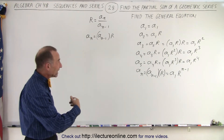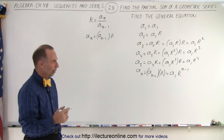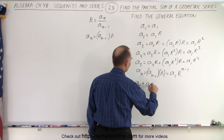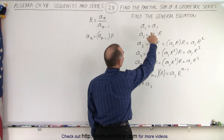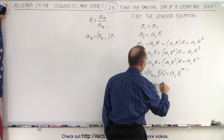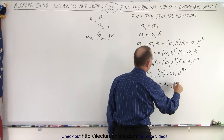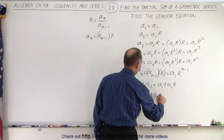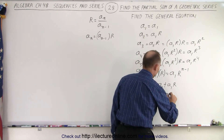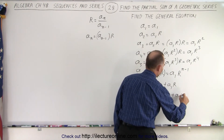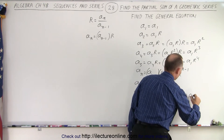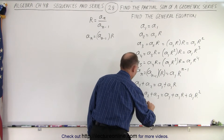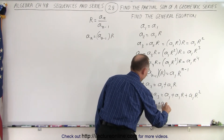Now that we have an expression for each of those terms, we're going to start adding them up one at a time. So a sub 1 plus a sub 2 is equal to a sub 1 plus a sub 1 times R. And a sub 1 plus a sub 2 plus a sub 3 is going to be equal to a sub 1 plus a sub 1 times R plus a sub 1 times R squared.